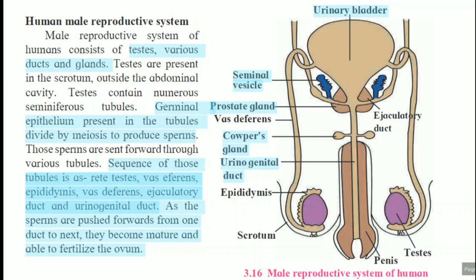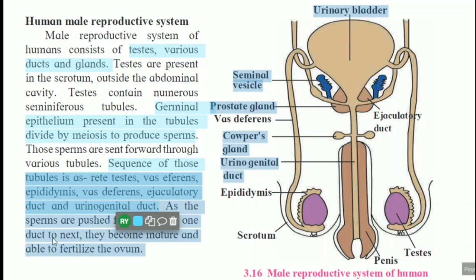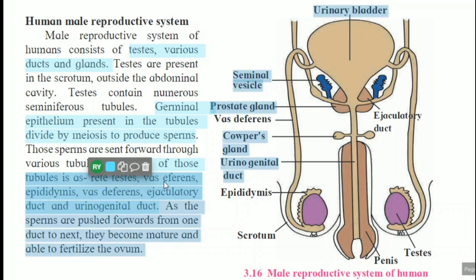Sperms are germ cells, and the production of germ cells occurs through the meiosis process. Those sperms are sent forward through various tubules. The sequence of these tubules is: sperms are formed in the testis, then pass forward through the ducts. From the rete testis — the small pipe-like structure inside the testis — they move forward.